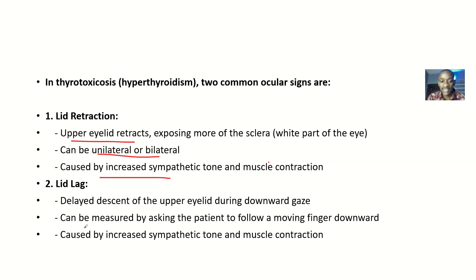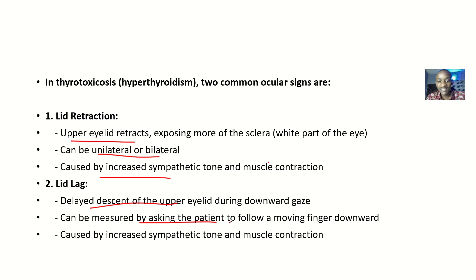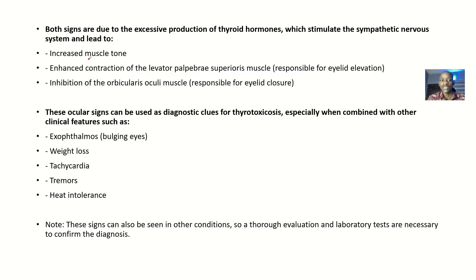Lid lag is the delayed descent of the upper eyelid on downward gaze. When looking down, the eyelids should descend, but if they are still lagging behind, that is lid lag. It can be measured by asking the patient to follow a moving finger downward — if the eyelids remain elevated, that confirms lid lag. It is also caused by increased sympathetic tone and muscle contraction.